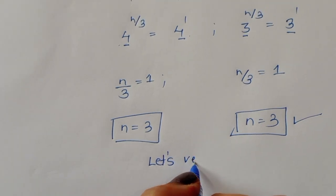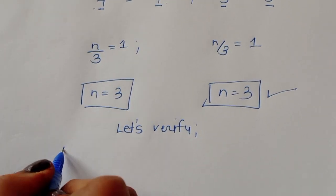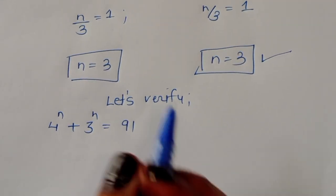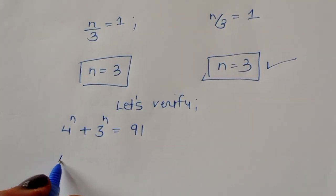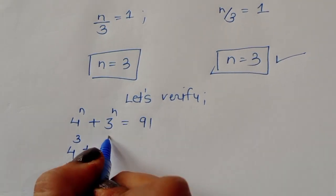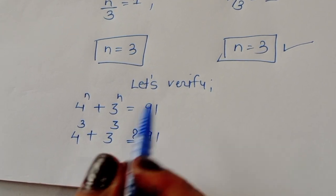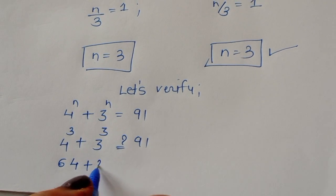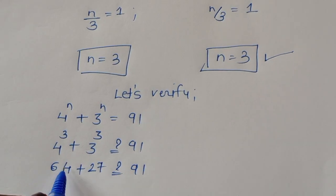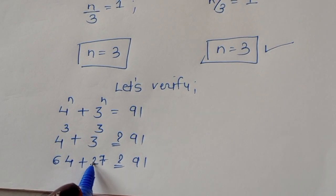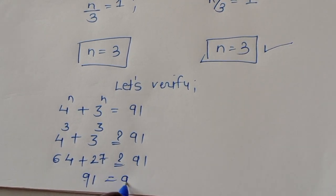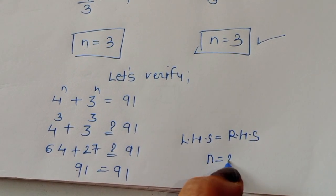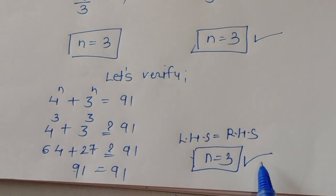Let's verify: 4 power n plus 3 power n equals 91. Substituting n equals 3: 4 power 3 plus 3 power 3 equals 64 plus 27 equals 91. LHS equals RHS. The value of n equals 3 is the correct solution.